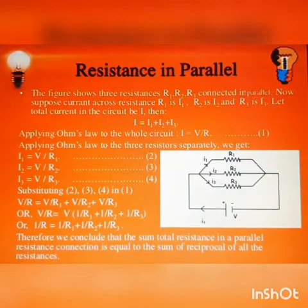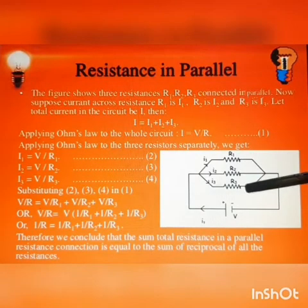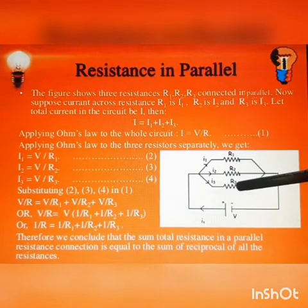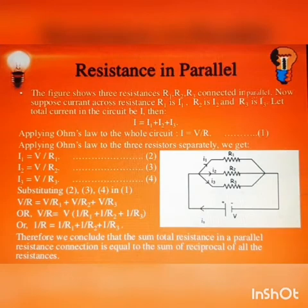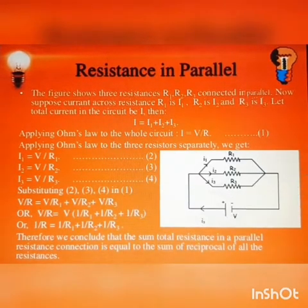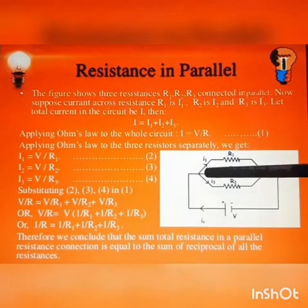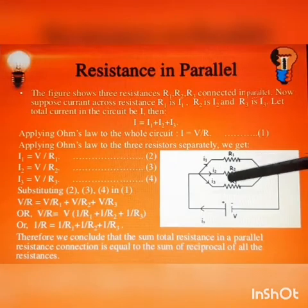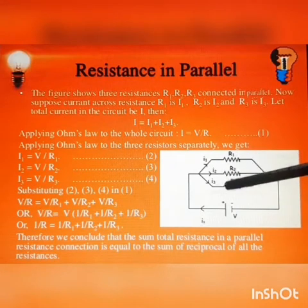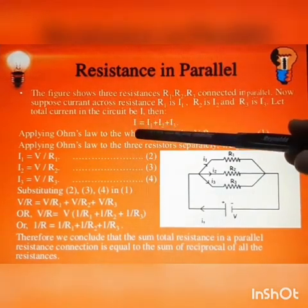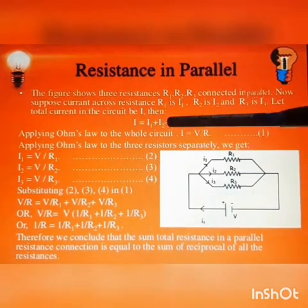Now let us move on to resistance in parallel. Here we can see a picture which shows resistances R1, R2 and R3 connected in parallel. In a parallel connection, voltage remains constant and current gets divided. So current through R1 is I1, through R2 is I2 and through R3 is I3. The total current will be I equal to I1 plus I2 plus I3.